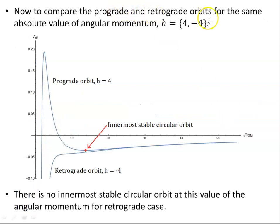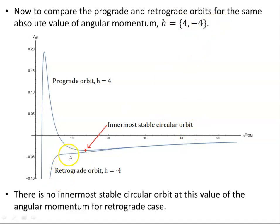Now to compare prograde and retrograde orbits for the same absolute value of angular momentum. A prograde orbit is when the particle orbits in the same direction of rotation as the black hole — co-rotating — and retrograde is counter-rotating. For H equals 4 (prograde) we get an effective potential with a local minimum, so you have an innermost stable circular orbit. But for H equals minus 4 (retrograde) there is no local minimum, so there's no innermost stable circular orbit at this value of angular momentum for the retrograde case.